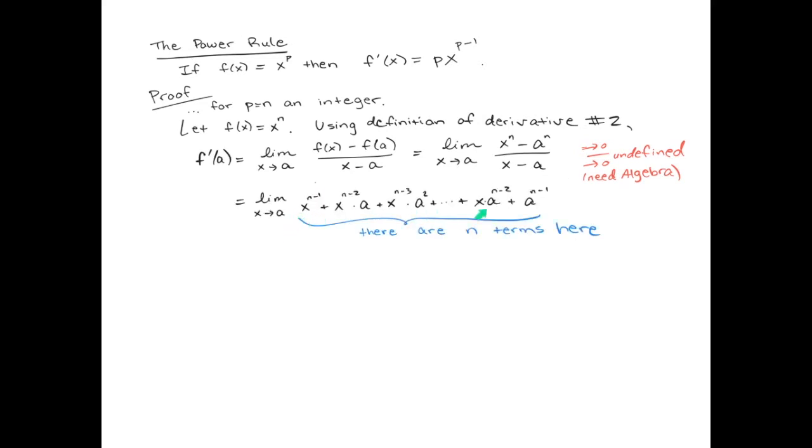If you count them up, there are n terms which appear in this expression, and we're taking the limit as x approaches a. This is a polynomial, so we can actually just plug in a everywhere we see an x because polynomials are continuous everywhere. This will become a^(n-1).